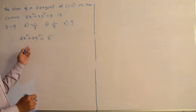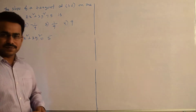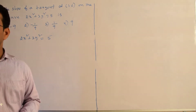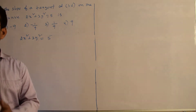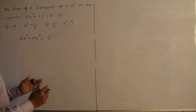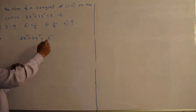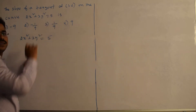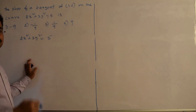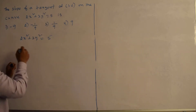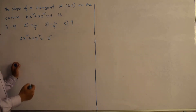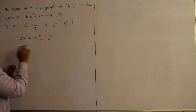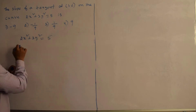Now, as part of this, first I need to calculate dy by dx. The definition of slope is: slope m equals dy by dx. We differentiate with respect to x on both sides and then substitute the point in the conclusion.